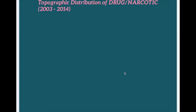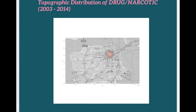Here's the topological graph for drug-related crimes. As time goes by, although there is some slight change in the contour lines, the center location of drug crime activity is highlighted in red, and it only shifts slightly — the center location of this crime basically does not change.